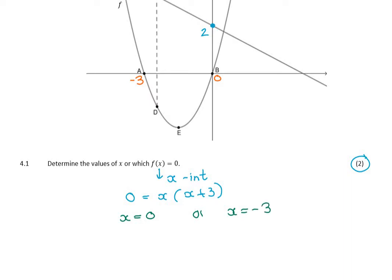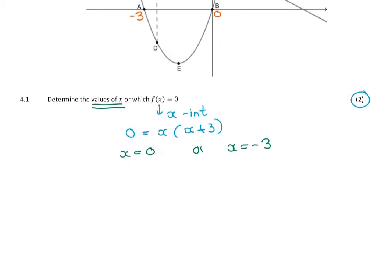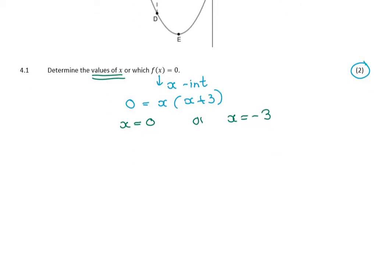Now just be careful to answer the question. It says determine the values of x, and so I don't have to write them as coordinates, because they ask for values of x, which means I'm finished. Always try and use your mark allocation as a guide. Two marks, if you had to multiply out and then factorize and find two values, that seems like a bit too much work.